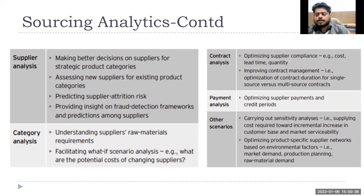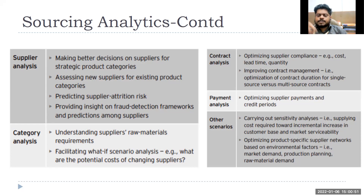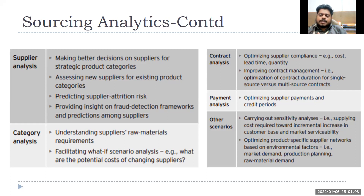Improving contract management involves deciding how many contracts and sources to have — single source or multi-source, meaning for the same material, do you have a single supplier or multiple vendors? Then payment analysis, from the financial perspective — some big companies have a separate department for supply chain finance, looking into accounts payable, general ledger, and where they can save money.